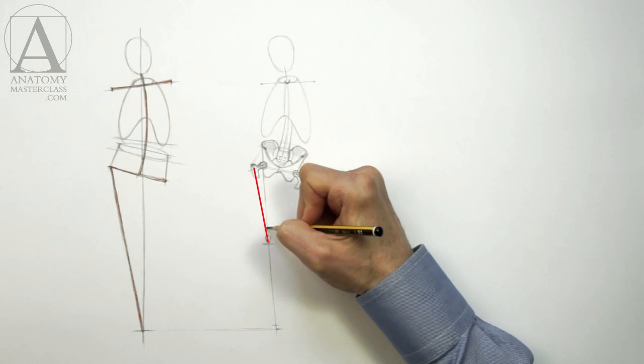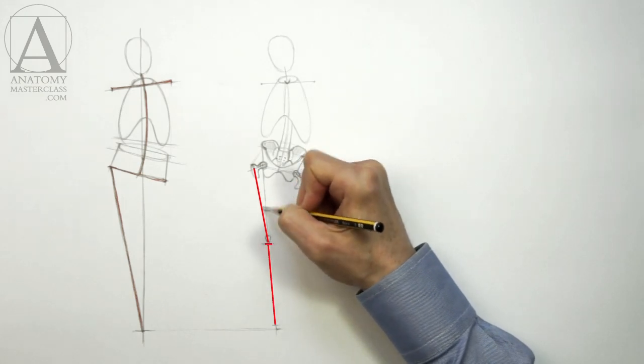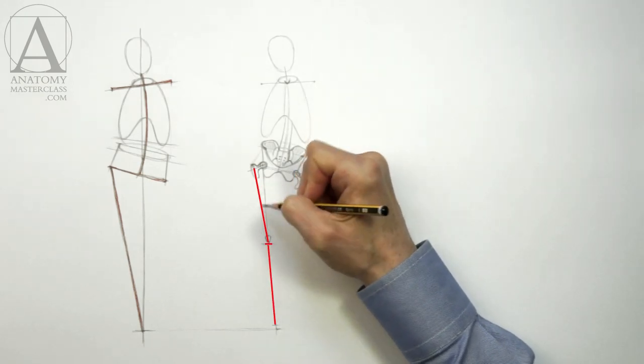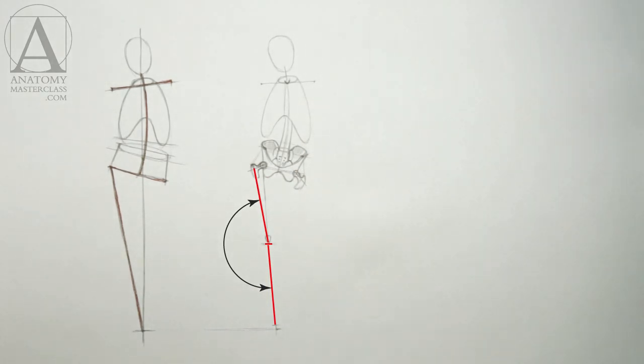The axis of the femur and the axis of the lower leg do not lie on the same line. As you can see, there is an angle between them.